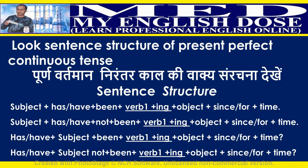Sentence structure of present perfect continuous tense: Positive — subject plus has or have plus been plus first form of a verb plus -ing plus object plus since/for plus time. Negative — subject plus has or have plus not plus been plus first form of a verb plus -ing plus object plus since/for plus time. Interrogative — has or have plus subject plus been plus first form of a verb plus -ing plus object plus since/for plus time.